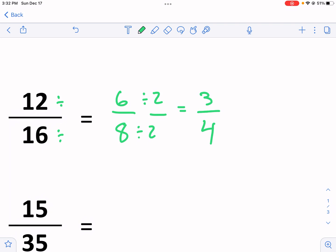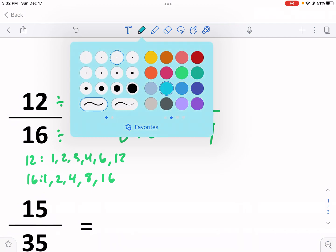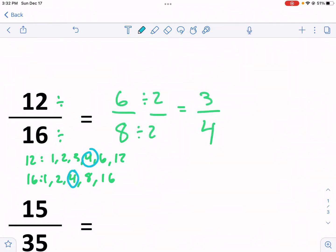So, really what happened was if I list my common factors, I get 1, 2, 3, 4, 6, 12, and for 16, I have 1, 2, 4, 8, and 16. You'll see the greatest common factor was four, not two.